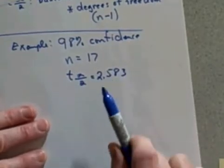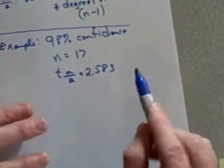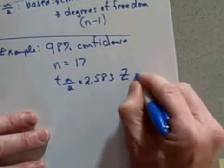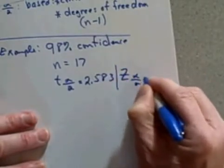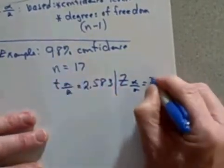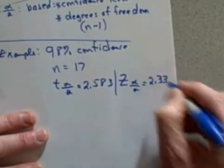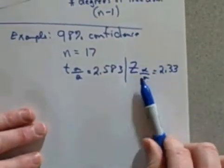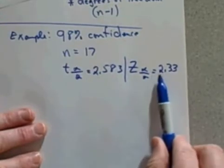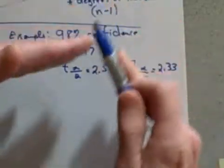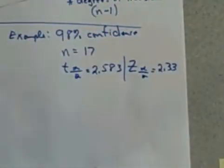Now before we go any further, I want to compare this to the corresponding z-score. The z sub alpha over 2 value we know for 98% is 2.33.